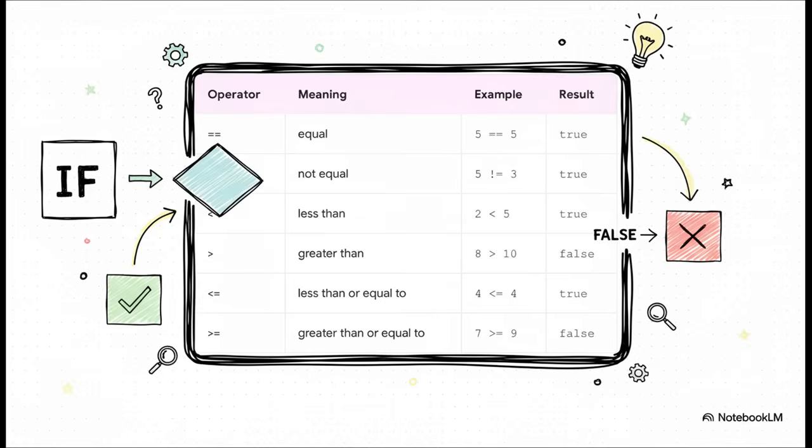Each one is designed to give us that clean yes or no, that true or false answer. The double equals is just asking, are these two things exactly the same? The exclamation point with the equals, that's the opposite. Are these two things not equal? And then you've got the classics you already know. Greater than, less than, and their buddies, less than or equal to, and greater than or equal to.